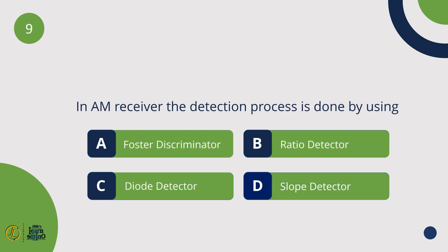In an AM receiver, the detection process is done by using a diode detector.